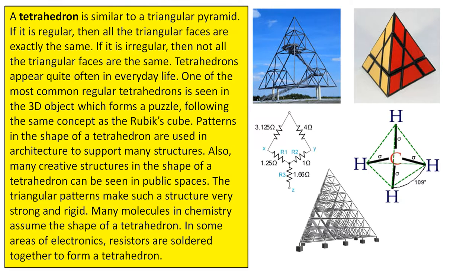A tetrahedron is similar to a triangular pyramid. If it is regular, then all the triangular faces are exactly the same. If it is irregular, then not all the triangular faces are the same.